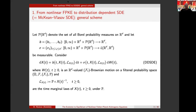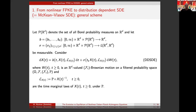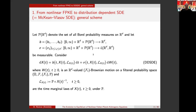From nonlinear Fokker-Planck equations to distribution-dependent SDEs. We start with a McKean-Vlasov stochastic differential equation. The coefficient B is a time-dependent vector field on R^d that also depends on a probability measure — so it has three variables and takes values in R^d. Similarly, sigma depends on the same space and takes values in matrices, i.e., linear maps from R^d to R^d. These are just measurability assumptions, nothing more.